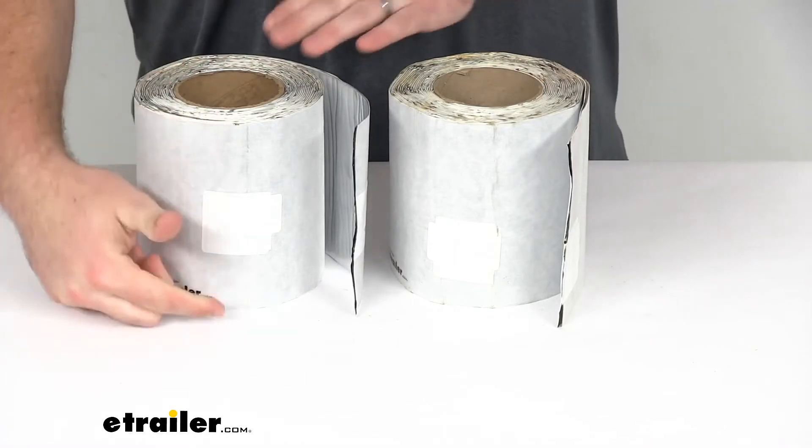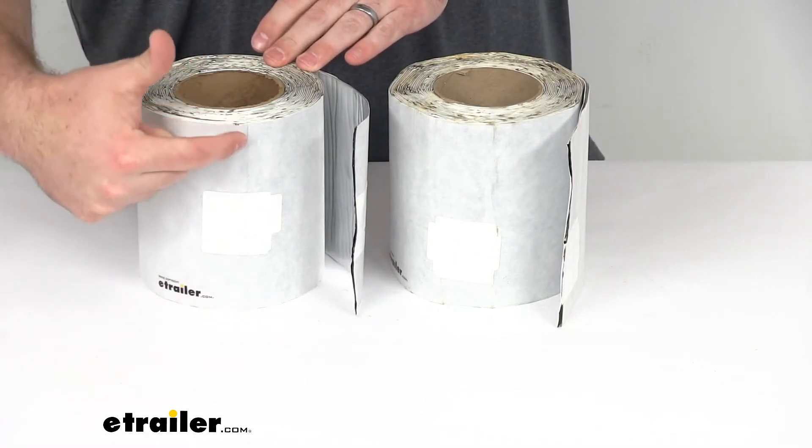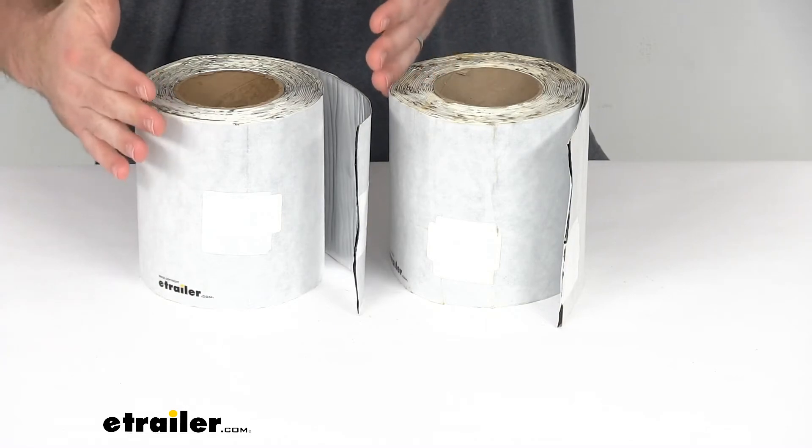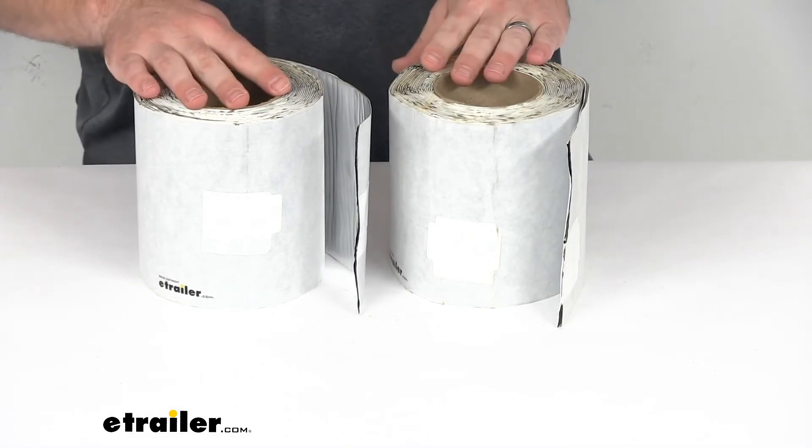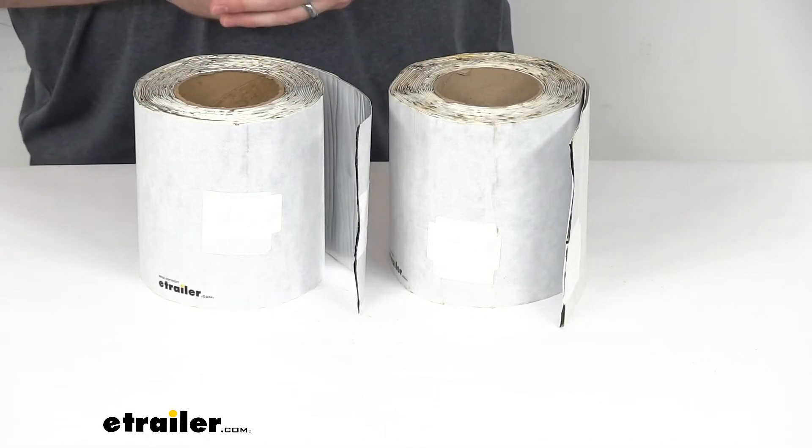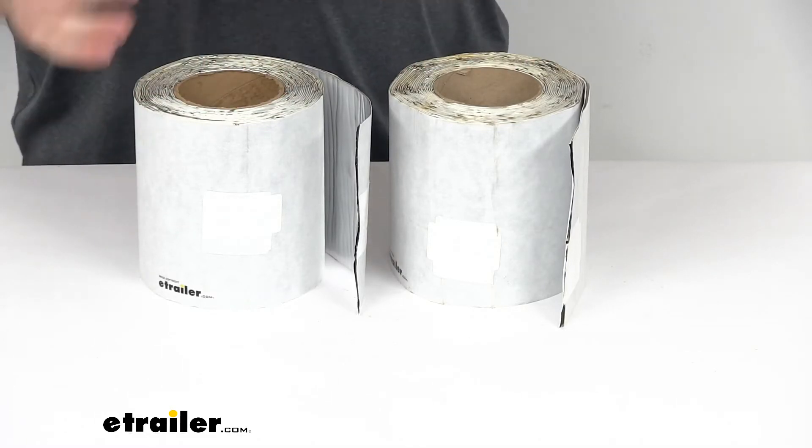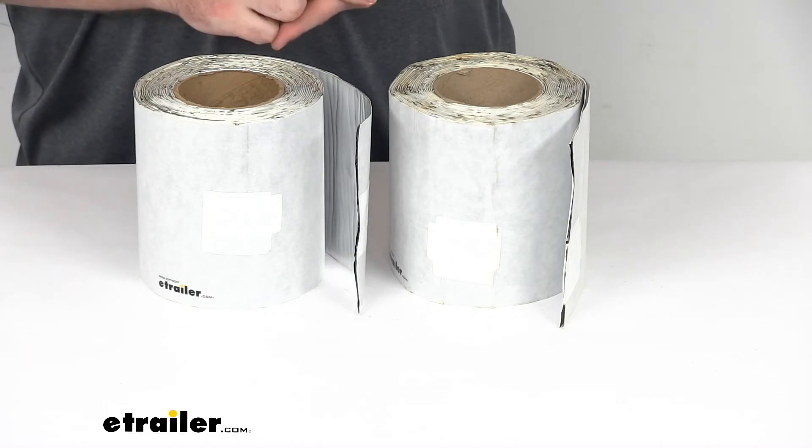These are both 6 inches wide by 25 feet long, so it's going to give you a lot of coverage there. So it would be good to have on hand if you are doing some roof repairs or just to keep on hand in case you were to have a limb fall on your RV or something like that and you need a quick repair to keep that water out.